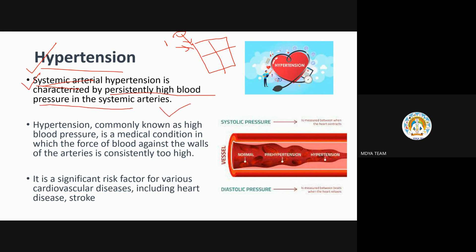Hypertension, commonly known as high blood pressure, is a medical condition in which the force of the blood against the arterial walls is persistently high — meaning the force exerted by the blood on artery walls is consistently elevated.